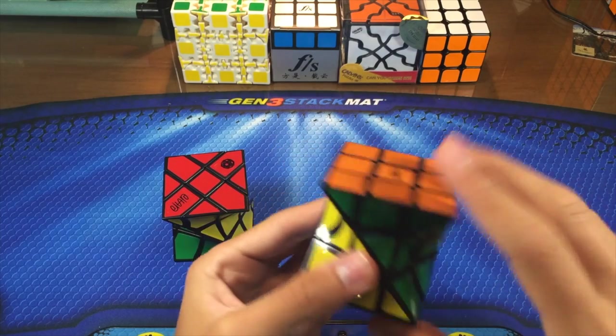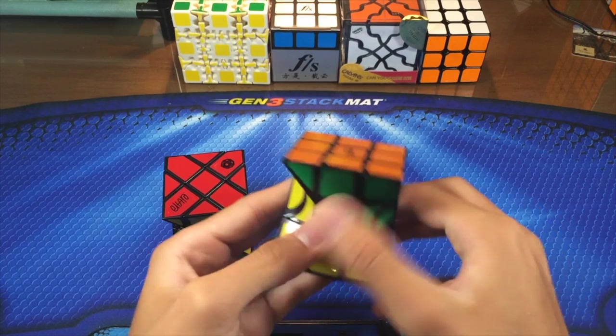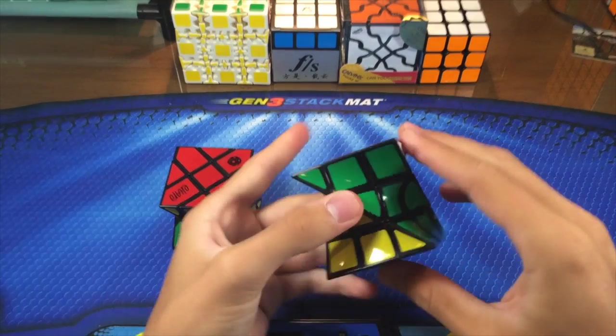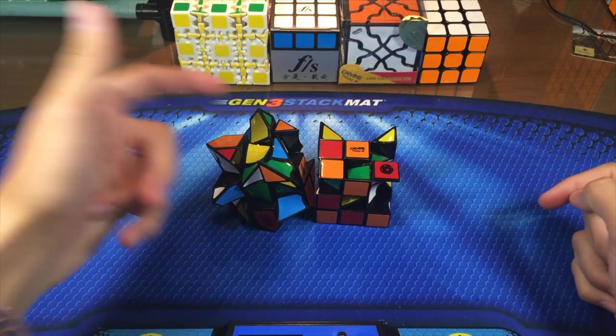And one way to solve it is just get a hair dryer on the warm setting, blow it on there and sort of push it on. So I'm going to go ahead and scramble these and then solve them. Alright, so here's what they look like scrambled. Here we have the 3x3 and the Fisher twist.